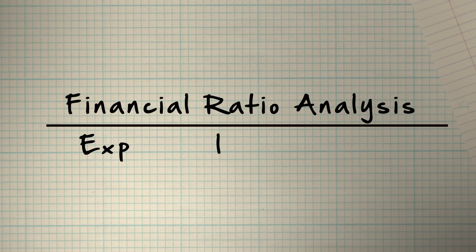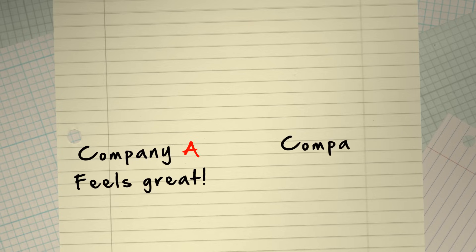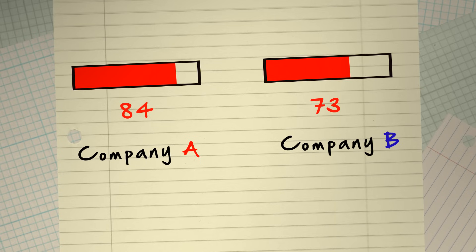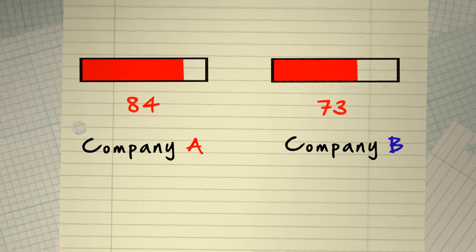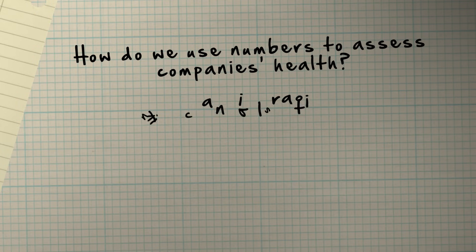Financial Ratio Analysis Explained in 3 Minutes. Sometimes it's not enough to simply say a company is in good or bad health. To make it easier to compare a company's health with other companies, we have to put numbers on this health so that we can compare these numbers with the numbers of other companies. How do we use numbers to assess company health? This is where financial ratios come in.